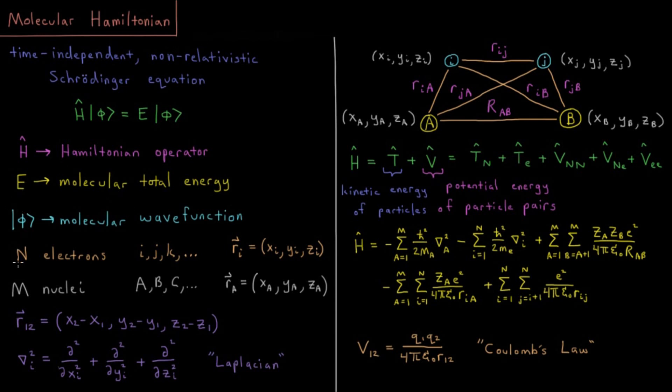We have electrons in this system, n of them. Typically n indicates the number of electrons. Oftentimes we use indices for electrons like i, j, and k, which run from 1 to n. We indicate the position of a certain electron by ri, a position vector.